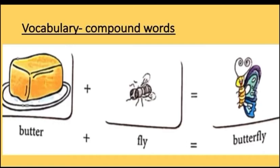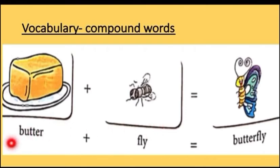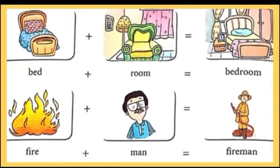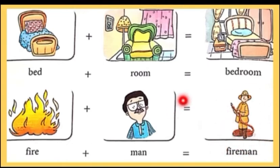Let's do some vocabulary on compound words. What are compound words, children? When two words come together to form a new word, they are called compound words. For example, 'butter' and 'fly' — when we combine them, it becomes 'butterfly'. Same way, 'bed' and 'room' becomes 'bedroom', and 'fire' and 'man' becomes 'fireman'. These are called compound words.